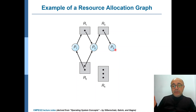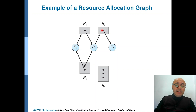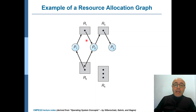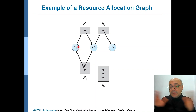When P3 completes, it will release its instance of R3, which will be assigned to P2, the process waiting for it. Then nothing prevents P2 from completing, so P2 will eventually complete and release R3, R1, and its instance of R2. The release of R1 allows P1 to acquire that instance, giving P1 all the resources it needs, so P1 can also complete. Therefore, there is no deadlock in this example.